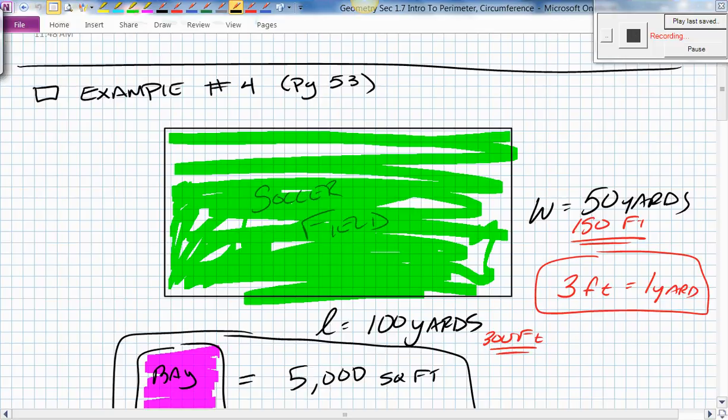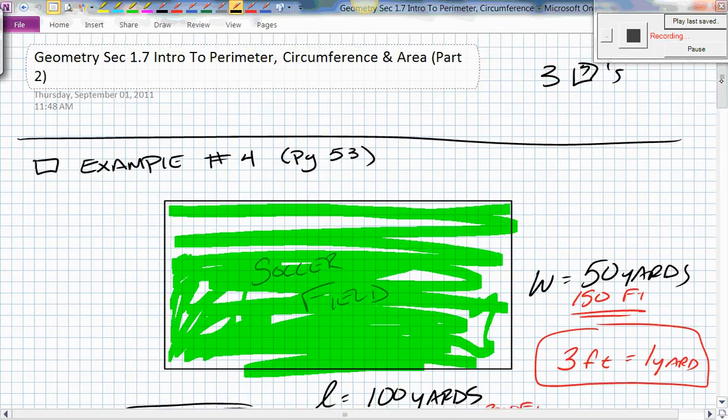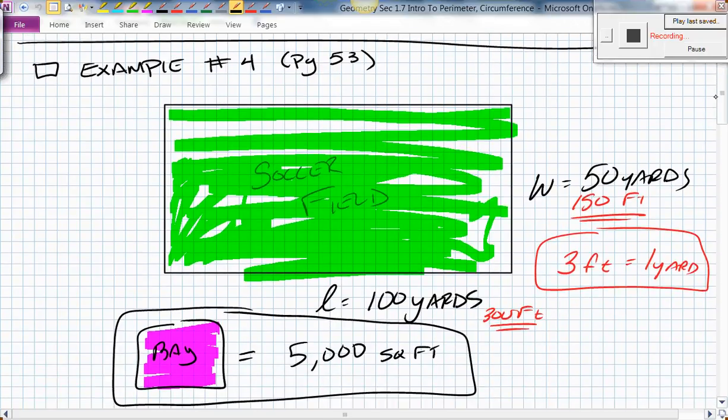Okay, and the second part of our day for geometry, this was section 1.7, Intro to Perimeter Circumference Area Part 2. What we did was we went over three examples in the book. So we did example page 53, example 4.